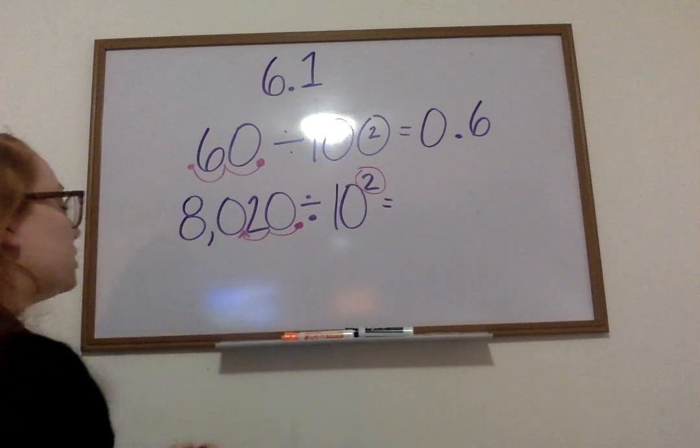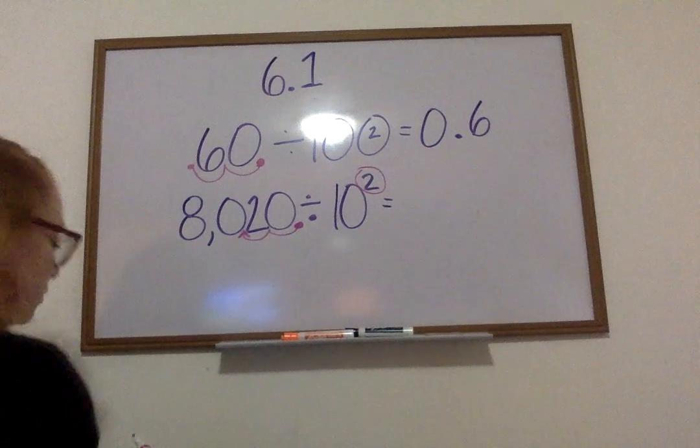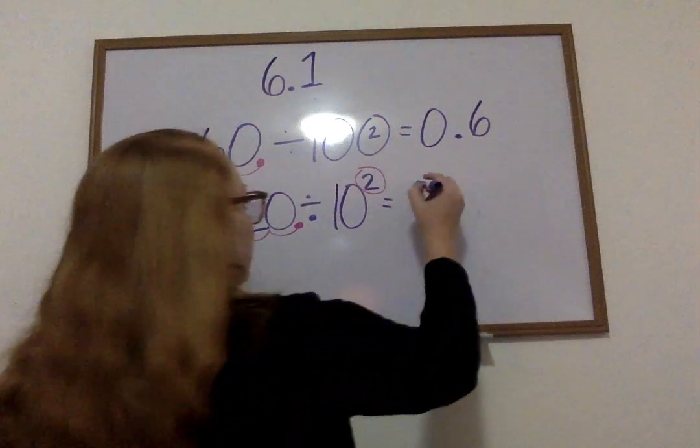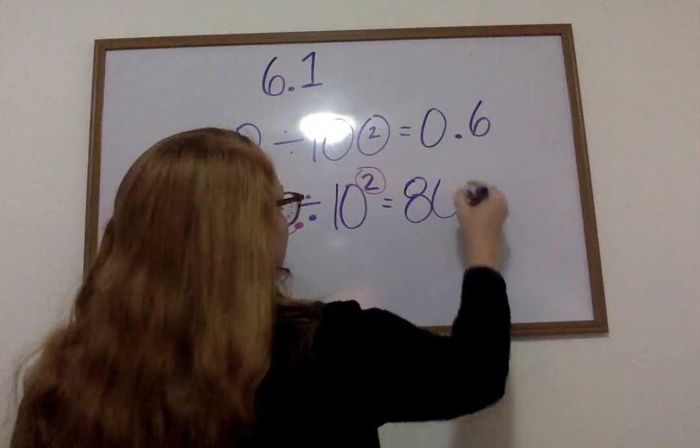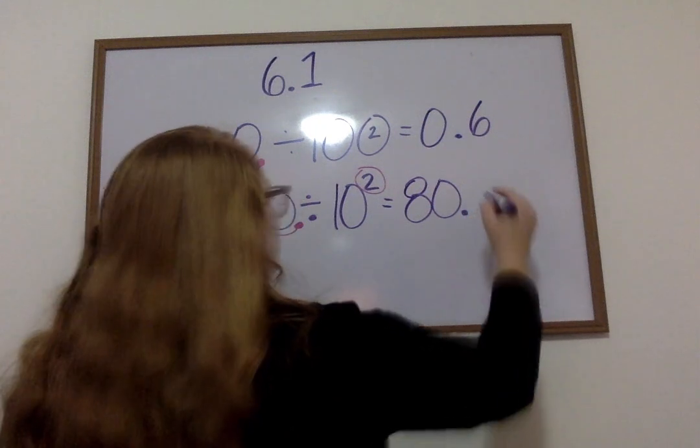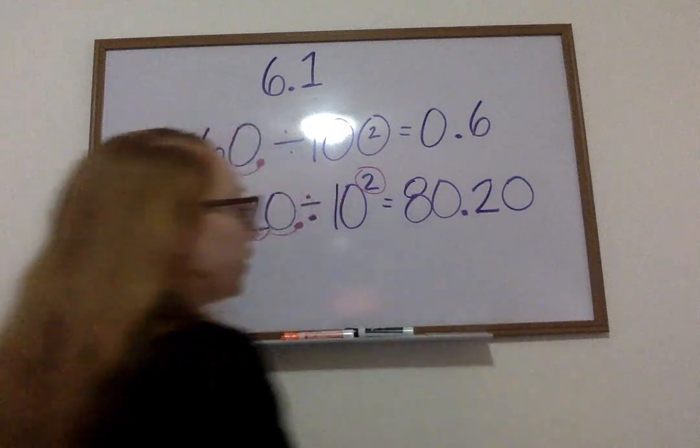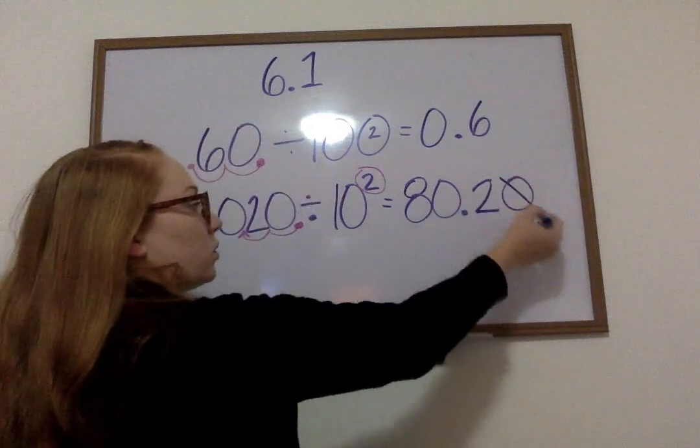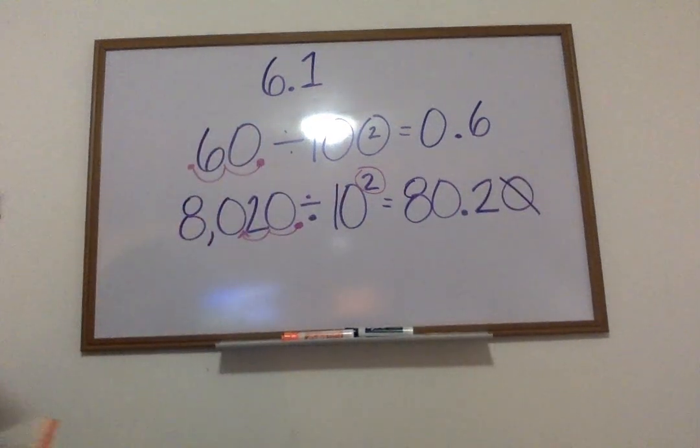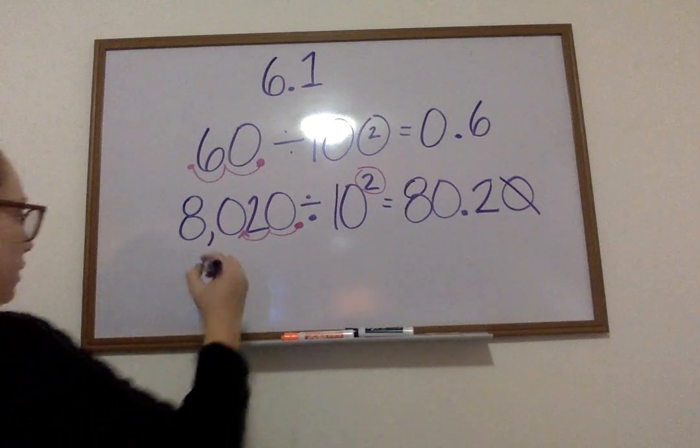So, it's going to end up between the 0 and the 2. My answer is going to be 80 and 2 tenths. I could add that 0 at the end or I could take it off. It could be equivalent either way. Next question.